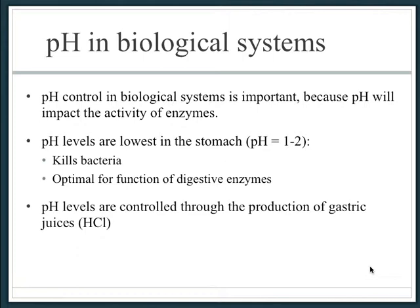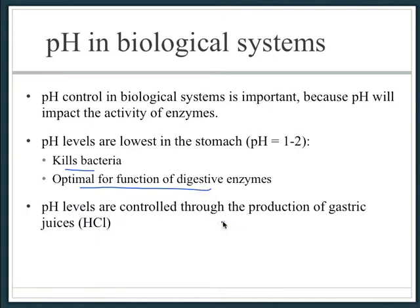pH in biological systems is important because pH impacts the activity of enzymes. pH is lowest — most acidic — in the stomach, where the pH is 1 to 2. This is important because it kills bacteria and is optimal for the function of digestive enzymes. These pH levels in the stomach are controlled through the production of gastric juices, that is, hydrochloric acid.